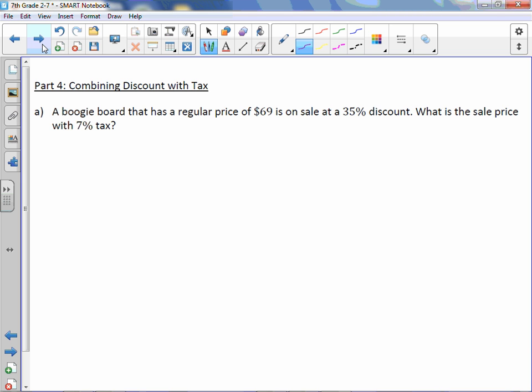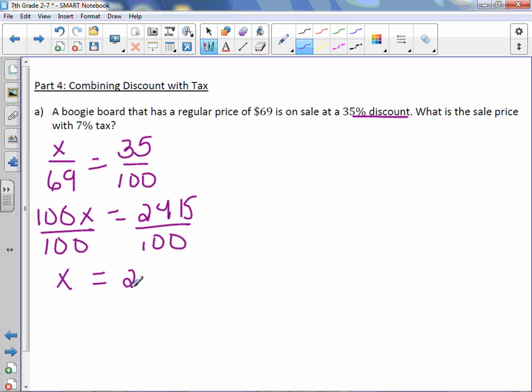We are going to do X over 69 equals our discount of 35%, 35 over 100. Cross multiply. 100X equals 2,415. Divide by 100. X equals 24.15. This is the discount. So we are going to take our original amount of $69 and subtract $24.15, and we have a sale price of $44.85.